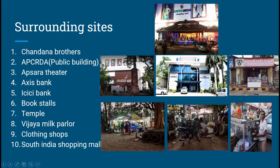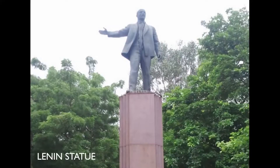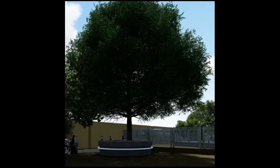The site surroundings include APCRDA — Andhra Pradesh Capital Regional Development Authority — Lenin Book Centers, Lenin Bus Stop, and South India Shopping Mall. The two main focal points of the site include the Lenin statue and a culturally significant tree, a combination of Jammie and Ragi, which is worshipped by the local people.